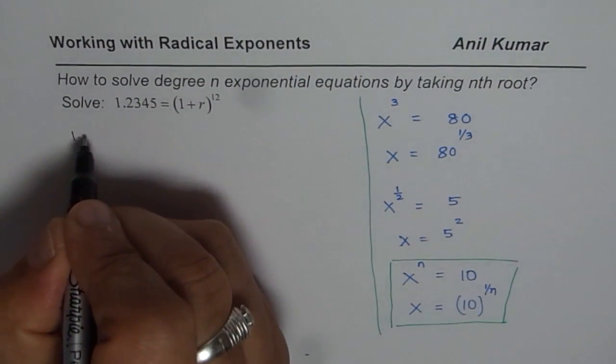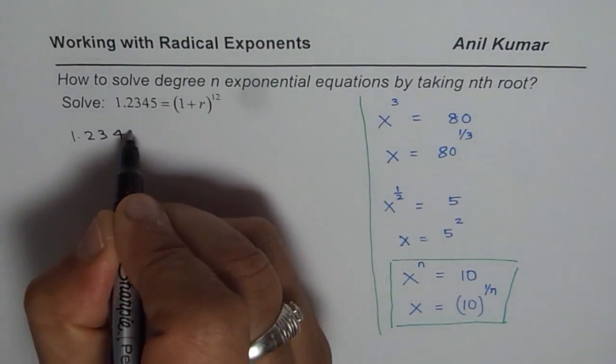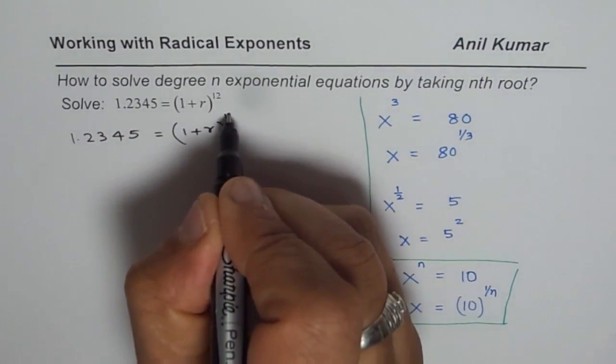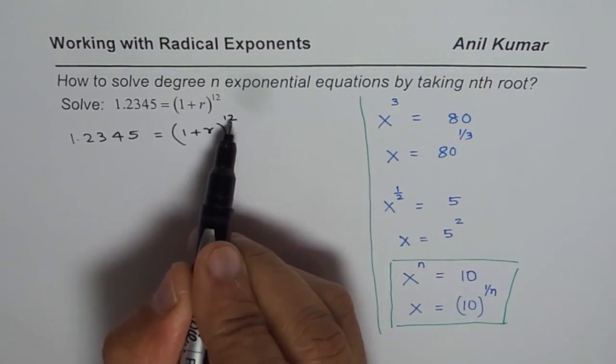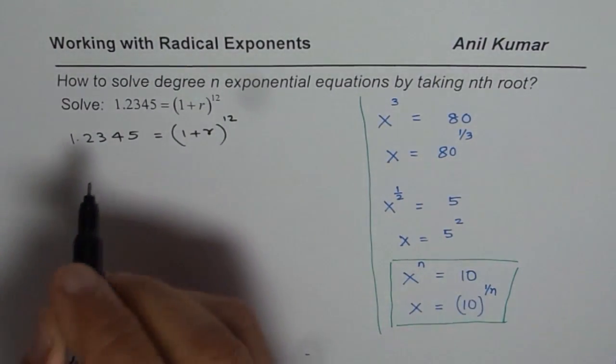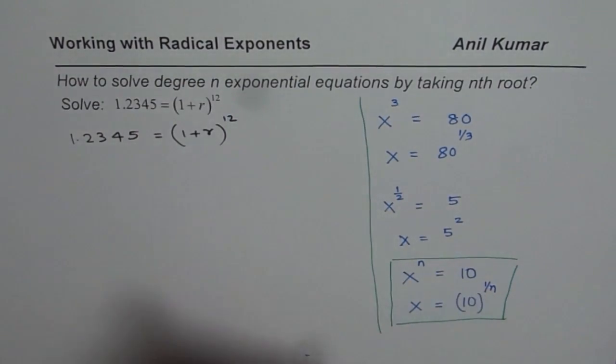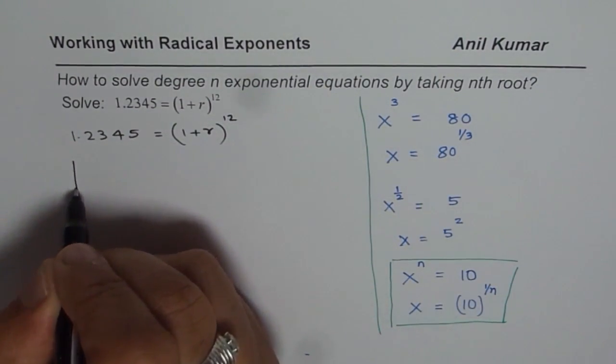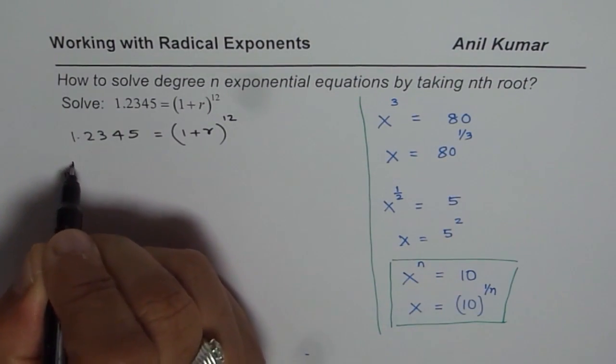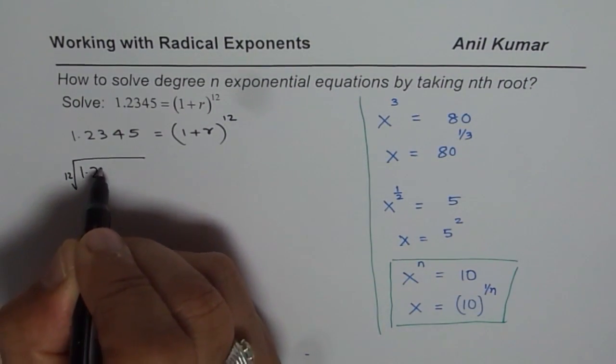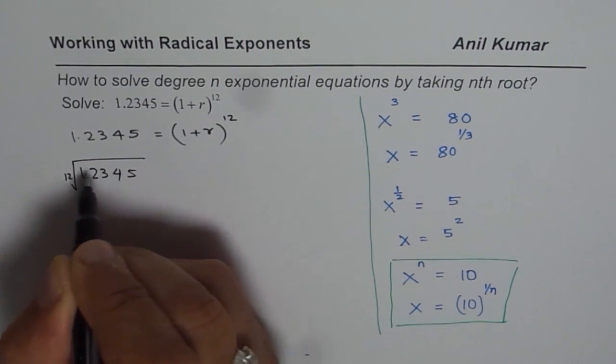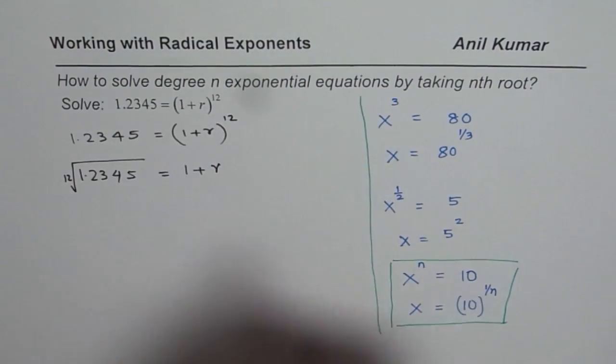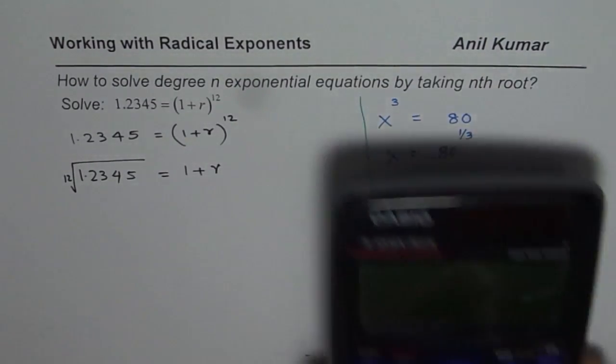So we have 1.2345 equals to 1 plus r to the power of 12. Now, since this is to the power of 12, I will do 12th root, right? 12th root could be written like this or also, we could also write it like this. Either way, it is correct. 1.2345, 12th root should be equals to 1 plus r. Now, to find the 12th root, let us take the calculator.